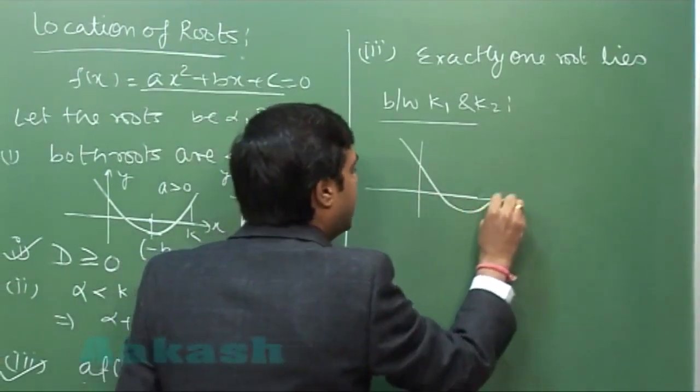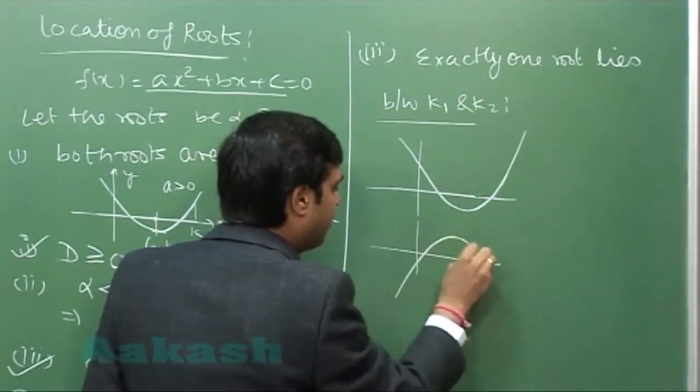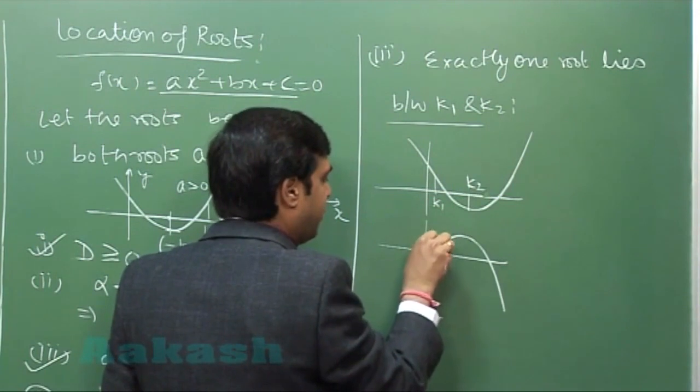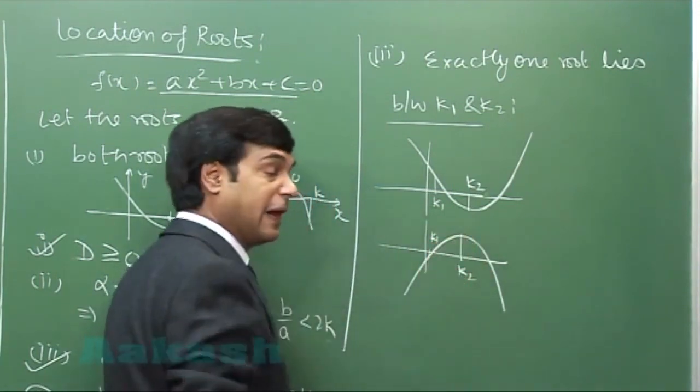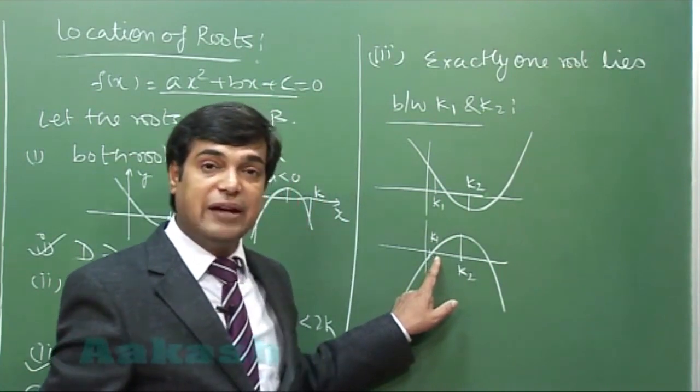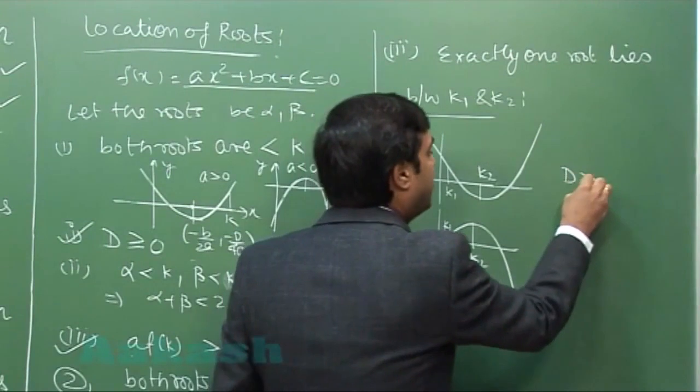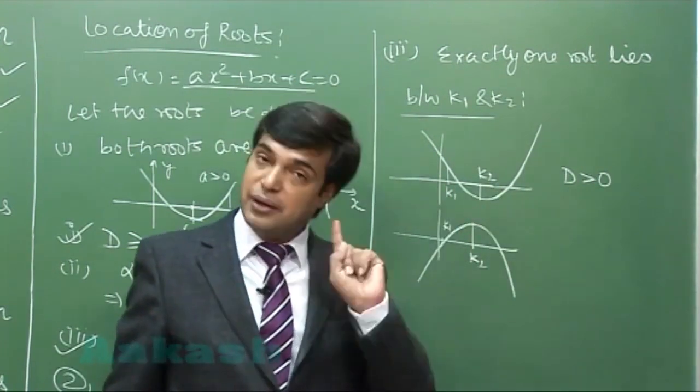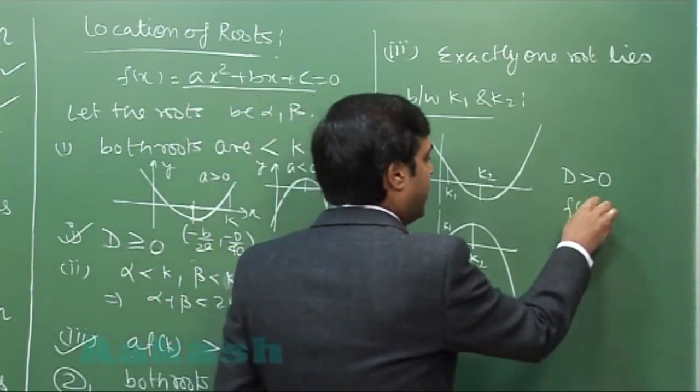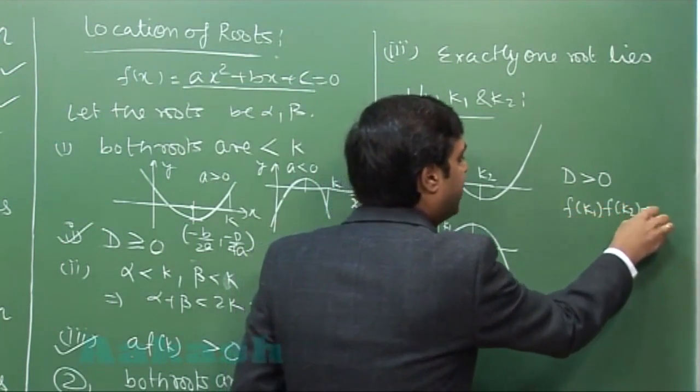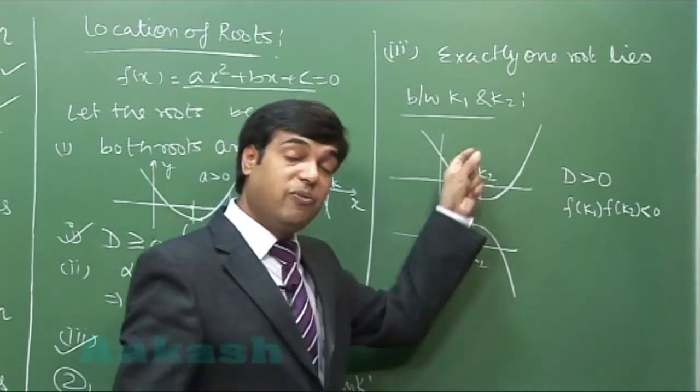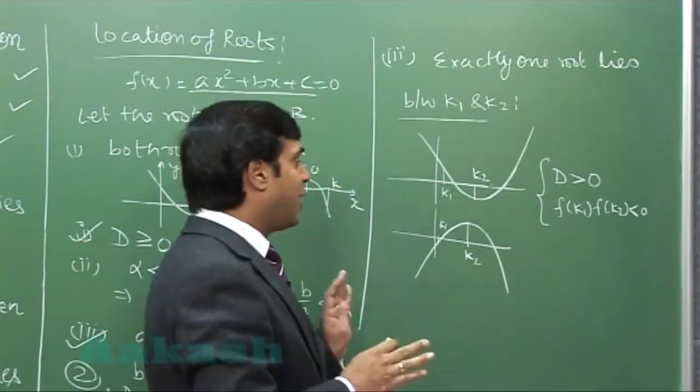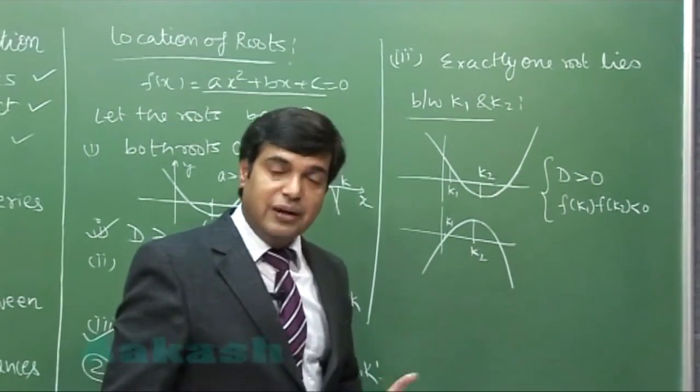If the question says exactly one root lies between k1 and k2, a quite common case. If the parabola is opening upward or downward, here is k1 and here is k2. For exactly one root between k1 and k2, first, D has to be positive—equality cannot be there because exactly one root means roots are distinct. Second, f(k1)·f(k2) must be negative. One is positive, the other negative, whether opening upwards or downwards. These two conditions are sufficient to determine the required result.